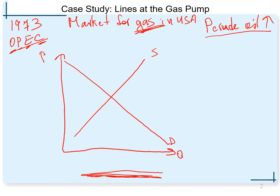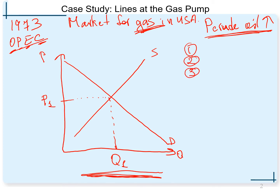If this is the market for gasoline in the United States, initially we had a certain equilibrium price and certain equilibrium quantity. When the price of crude oil increased, something is going to change on this market. From Chapter 4, we need to know three steps in analyzing new equilibrium: determine which curve is affected — supply or demand — figure out which way the curve is shifting, and then looking at the graph, determine the new equilibrium price and quantity.